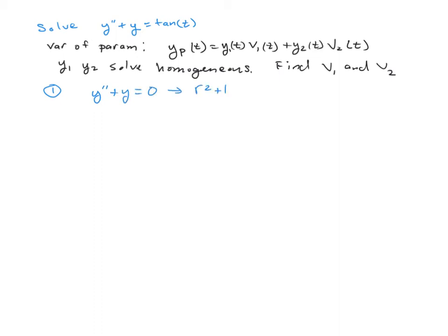The auxiliary equation is r² + 1 = 0, which gives r² = -1, so r = ±i. These purely imaginary roots give us sine and cosine. So y1(t) = cos(t) and y2(t) = sin(t).